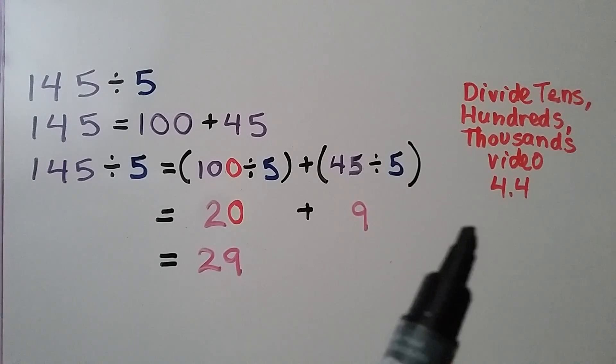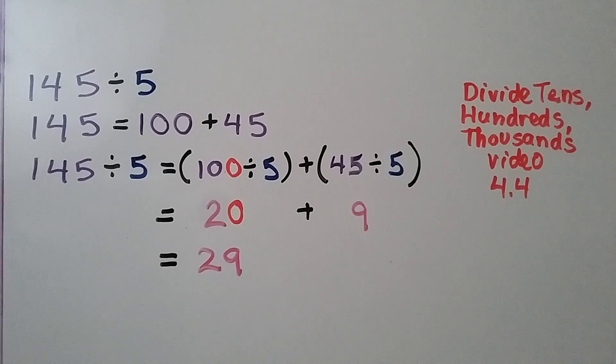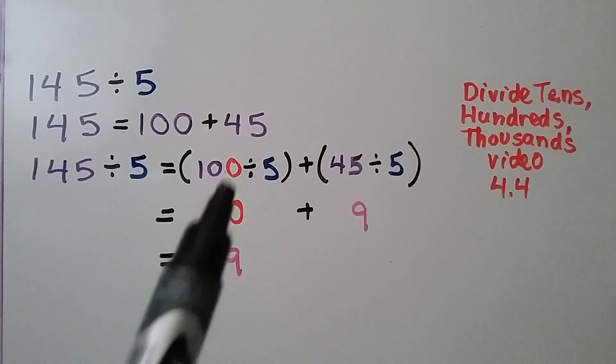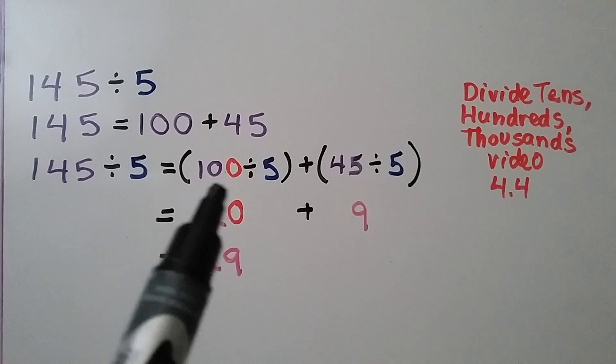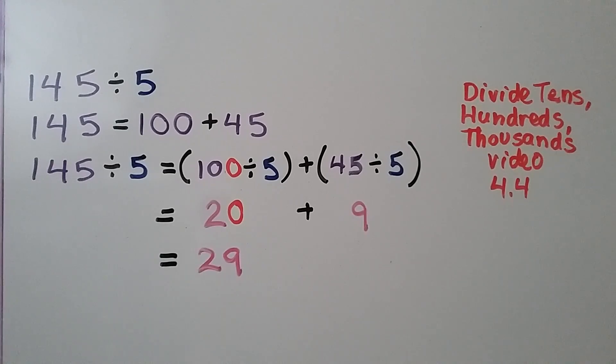You can see the video 4.4, where we learned how to divide tens, hundreds, thousands, and when there was a 0 in the dividend, how there would be a 0 in the quotient.